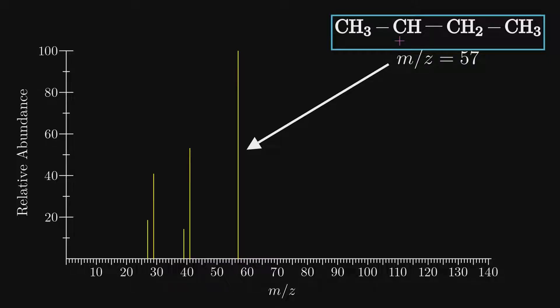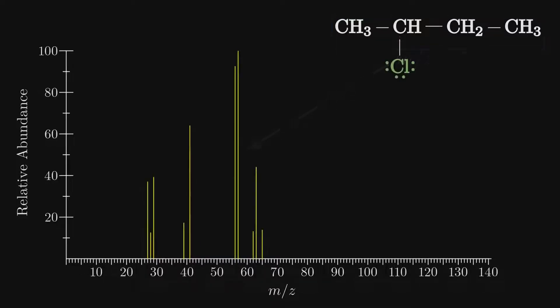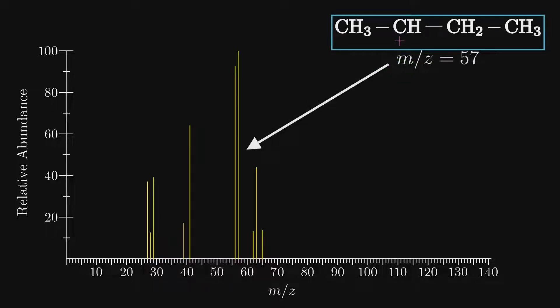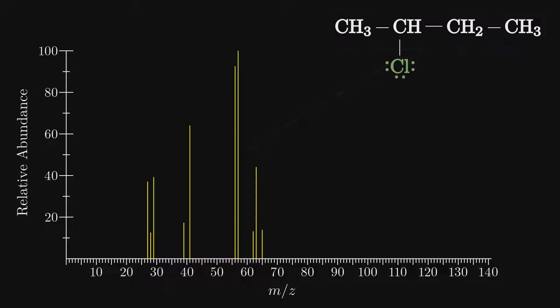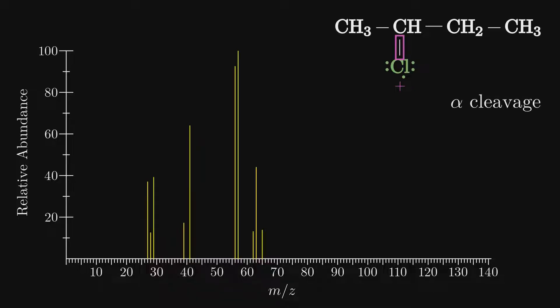This fragment is not only the base peak for 2-bromobutane, but there are no fragments of higher mass. Now contrast this with 2-chlorobutane. It also has a base peak at 57, which suggests it produces the same exact fragment, but despite having the same structure, it also produces fragments around mass 63. It turns out that the carbon-chlorine bond is stronger, so the molecular ion loses the chlorine less easily. That difference in strength allows something known as alpha cleavage to occur in the chlorobutane.